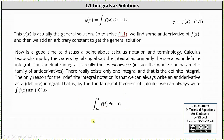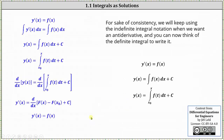Let's take a closer look at this. Again, starting with y prime of x equals f of x, we can integrate both sides of the equation, which gives us y of x equals the indefinite integral of f of x dx plus c. And we claim we can write this as the definite integral from x sub zero to x of f of t dt plus c.